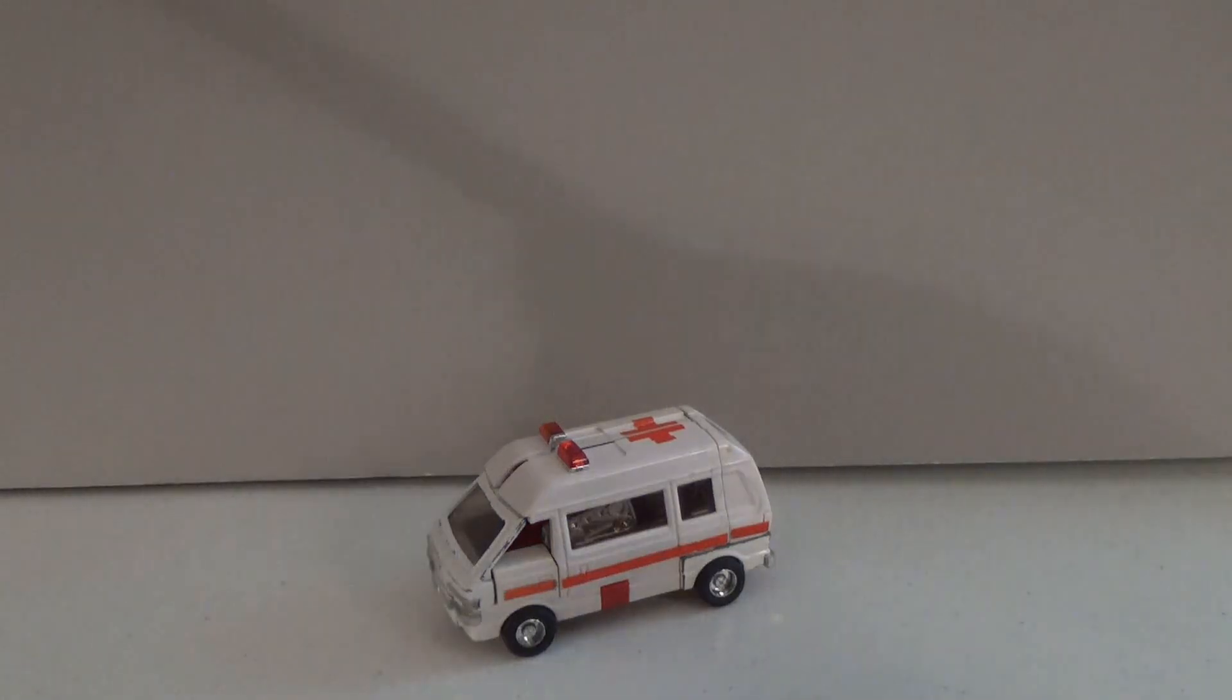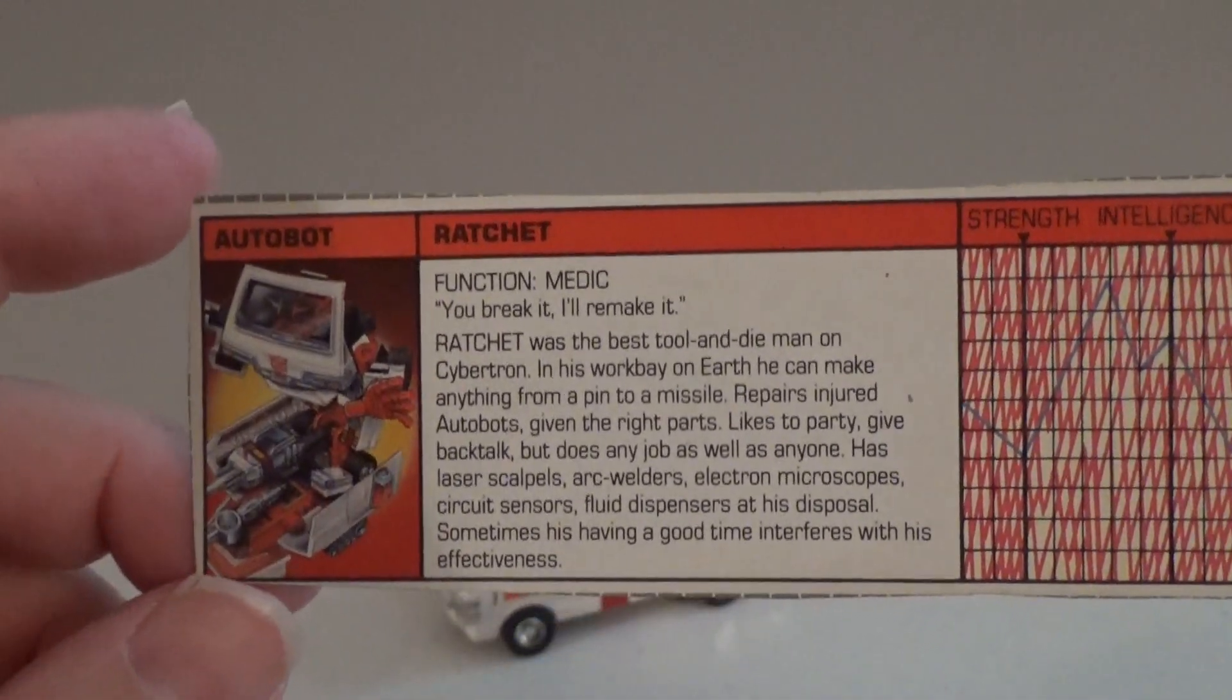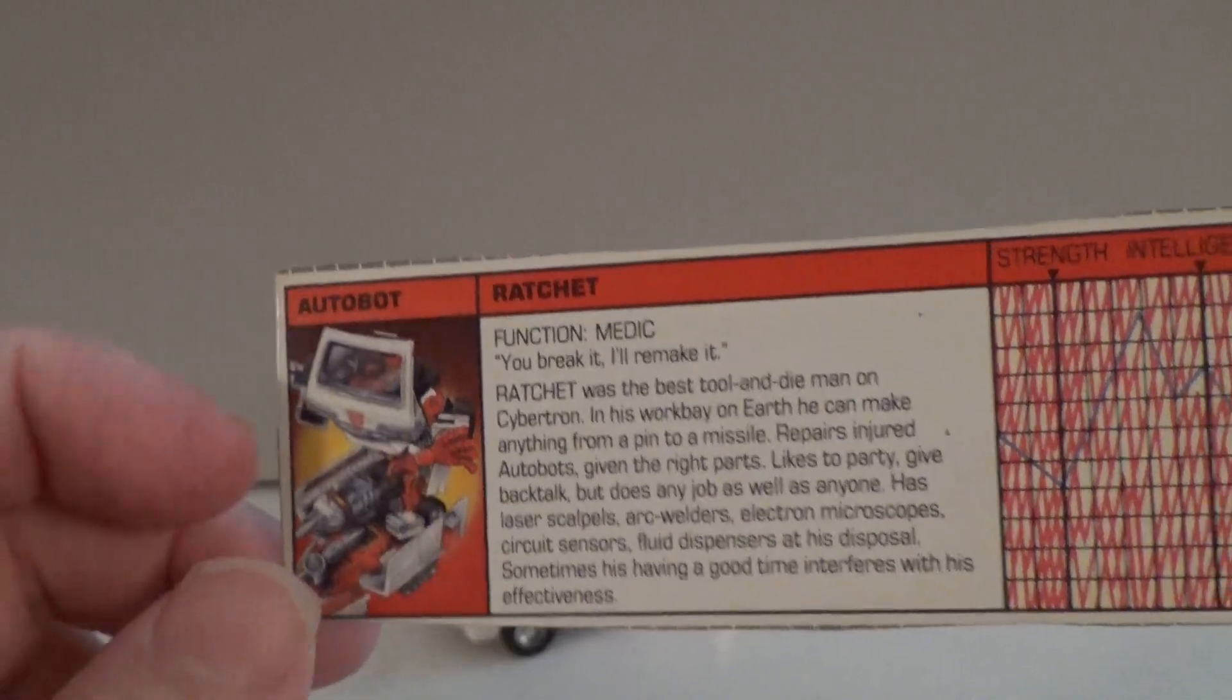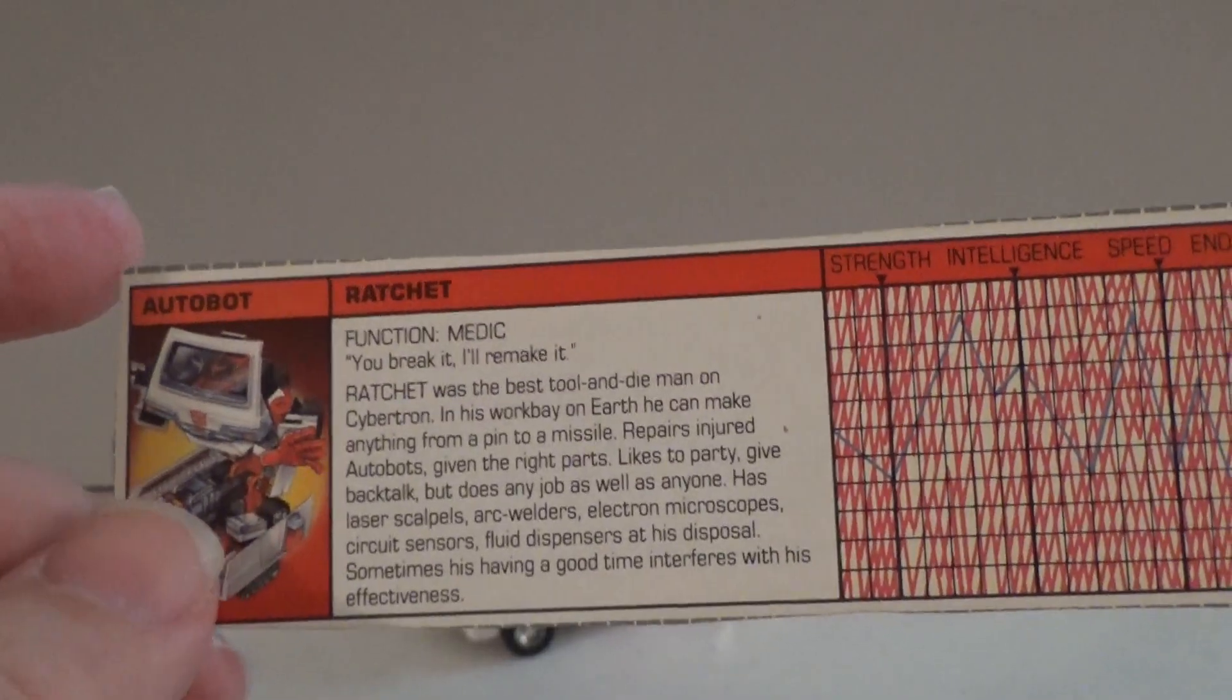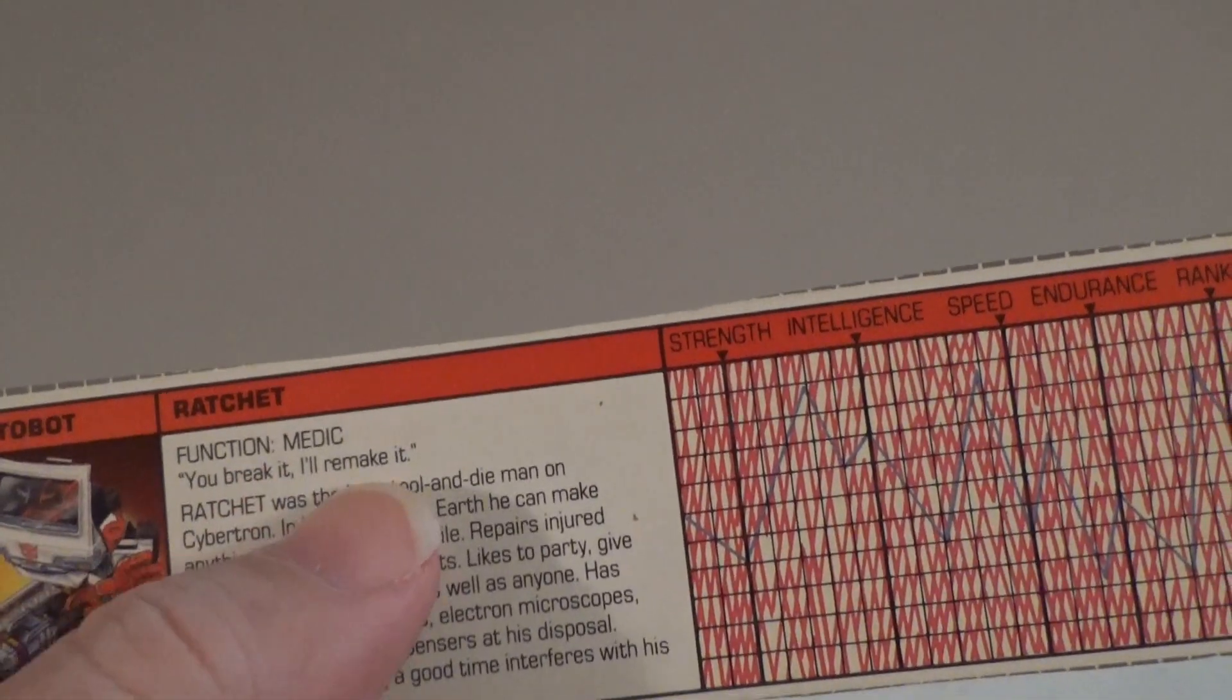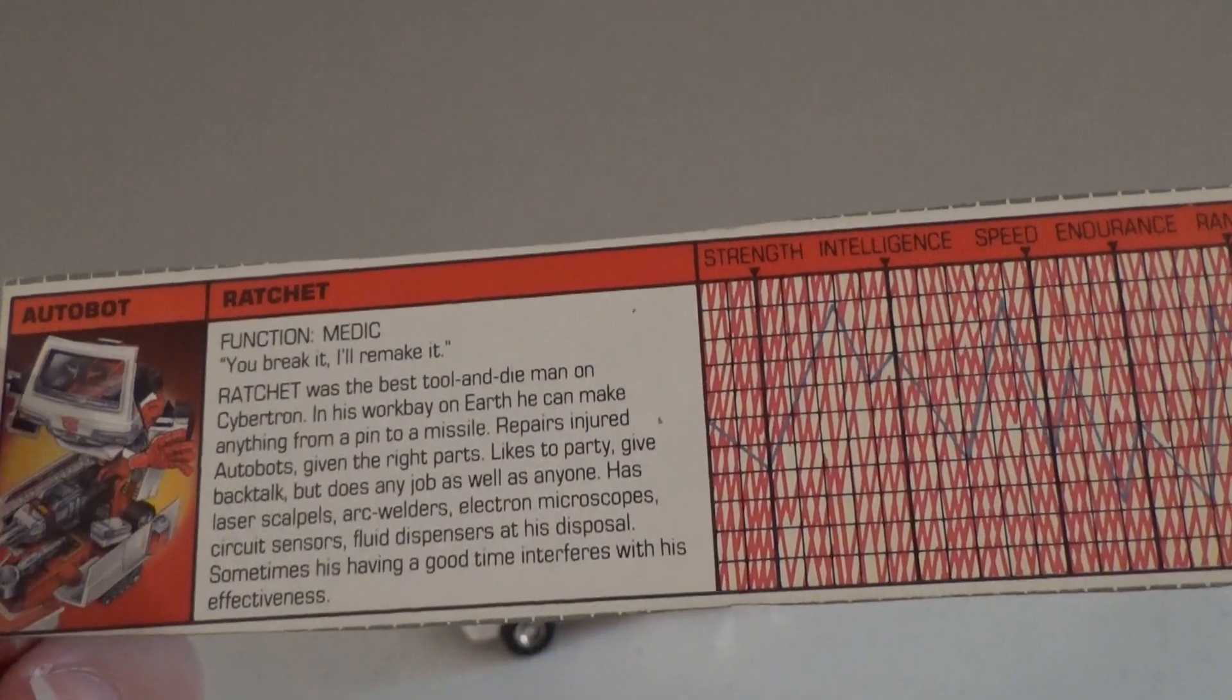There's a problem, I'm getting a little out of practice on some of these. His tech spec is done all in red to signify he is an Autobot, and it even says Autobot above his picture. And this picture would have been on the front of the box. He gives his name as Ratchet. His function is medic. And there's a quote associated with him. It says, you break it, I'll remake it.